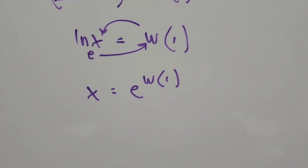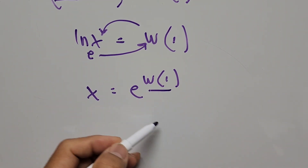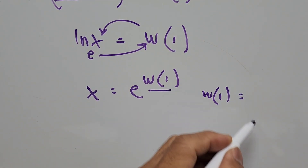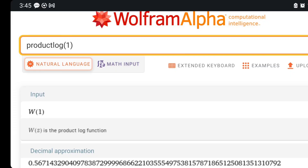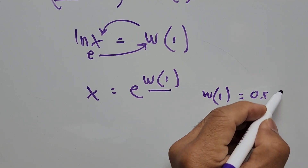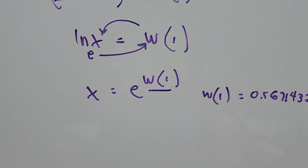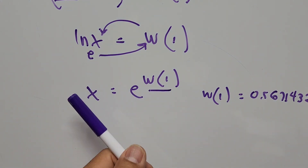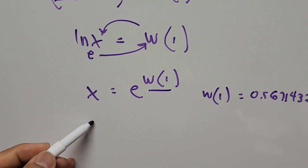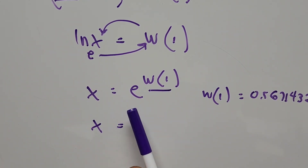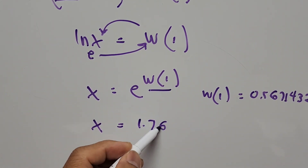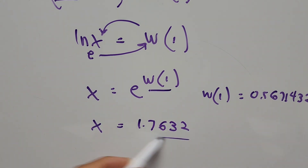From here we can calculate the value of W(1) using Wolfram Alpha, entered as the product log of 1. W of 1 equals approximately 0.56714329. Substituting back, x equals e to the power of W(1), which gives us x approximately equal to 1.7632.